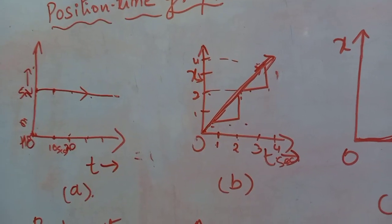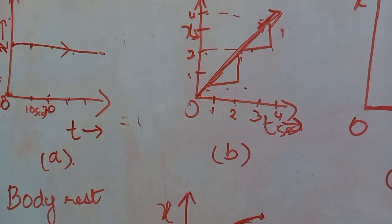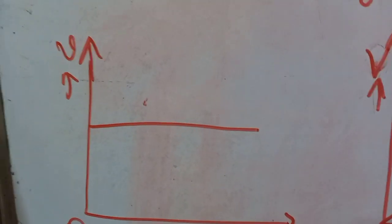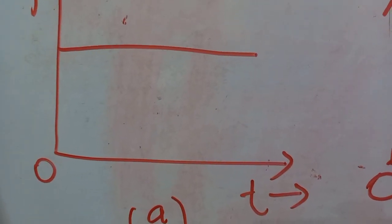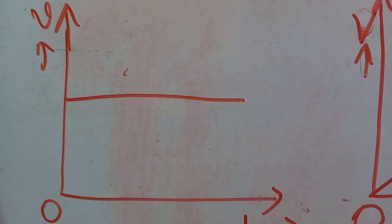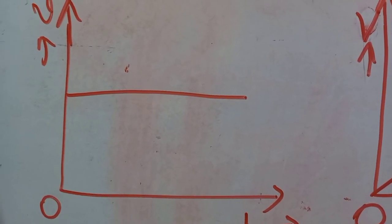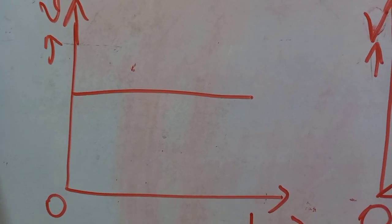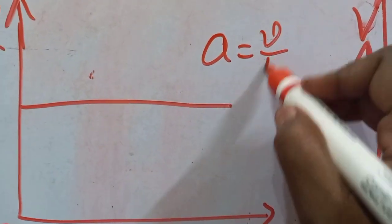In summary for the position-time graph: position is on the y-axis and time on the x-axis. Graph A: body at rest. Graph B: uniform velocity (linear graph). Graph C: increasing variable velocity. Graph D: decreasing variable velocity. Now let us see the velocity-time graph. Here, velocity is on the y-axis and time on the x-axis. In the first graph, the velocity is a straight line parallel to the x-axis — the body is moving with uniform velocity.